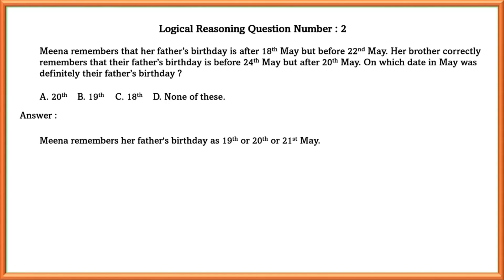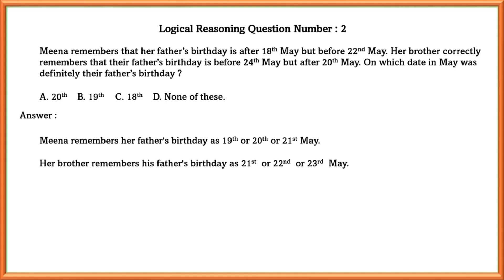Mina remembers the dates 19, 20, and 21st May. Her brother remembers 21st, 22nd, and 23rd May. As we can see, 21st May is common in both assumptions. Mina's father's birthday could be on 21st May, but there is no such option, so the answer is D — none of these.